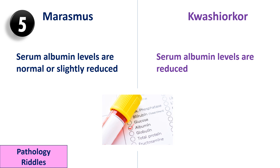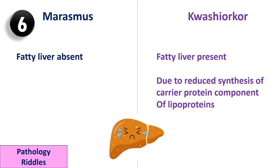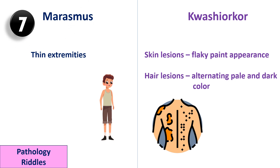Whereas in kwashiorkor, the serum albumin levels are markedly reduced. In marasmus, fatty liver is absent. In kwashiorkor, fatty liver is present due to reduced synthesis of the carrier protein component of lipoproteins.